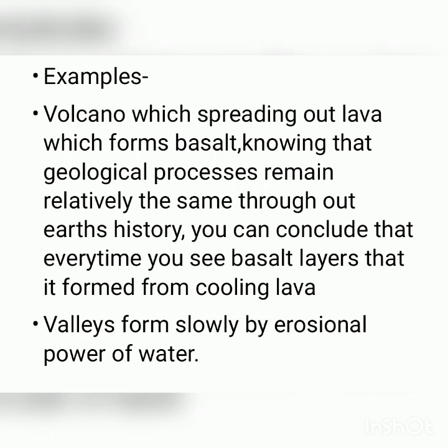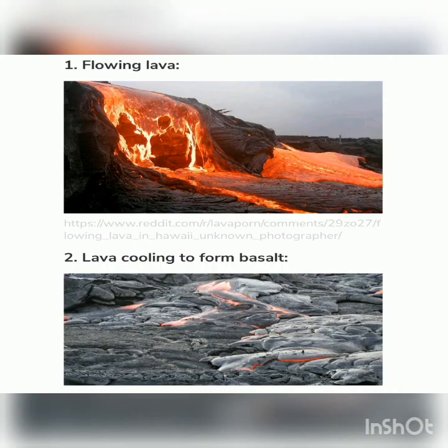For example, today you see an erosional landform like a valley on the ground. You can explain it as having been formed as a result of past erosional activities of water, or that there was a river present in the geological past. Second, in the present day you observe volcanoes spreading out lava which forms basalt layers. Knowing this, you can conclude that every time you see a basalt layer, there must have been a lava flow that occurred in the area, later cooled and formed basalt.